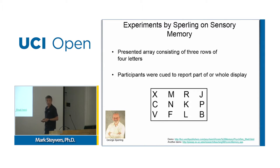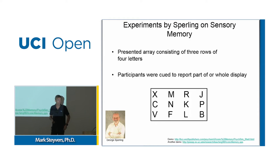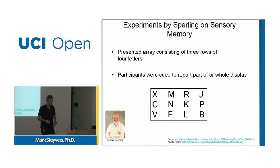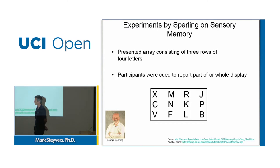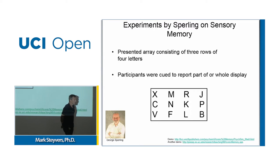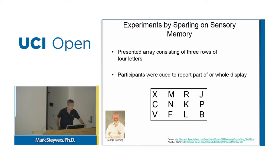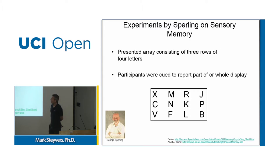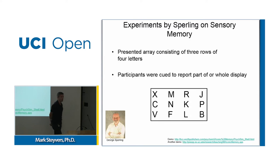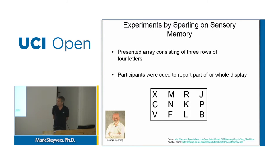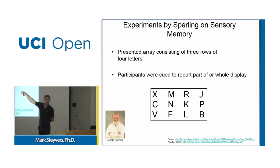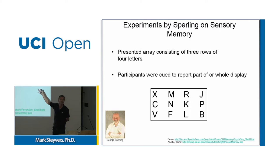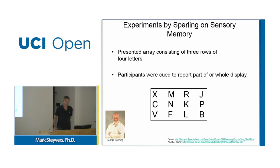There's a famous set of experiments conducted by George Sperling, a distinguished professor here at UC Irvine. His experiments suggested that our sensory memory is much more powerful than our experience suggests. He presented participants with arrays of letters — three rows of four letters. The array might be shown for a very short amount of time, like 50 milliseconds, and then you have to report any letter you remember from the display.